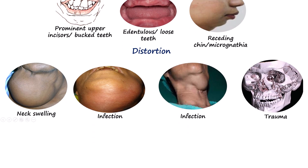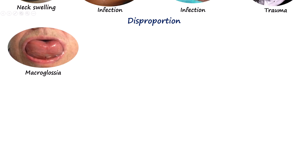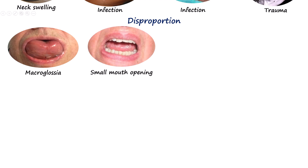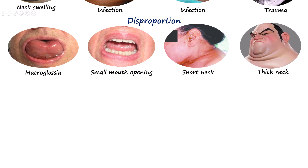The third D is disproportion, which describes an imbalance in airway structures that can make ventilation and intubation harder. A large tongue relative to the mouth can block the laryngeal view, a small mouth opening limits laryngoscope access, a short neck reduces space to align airway axes, and a thick neck adds bulk that hinders visualization.